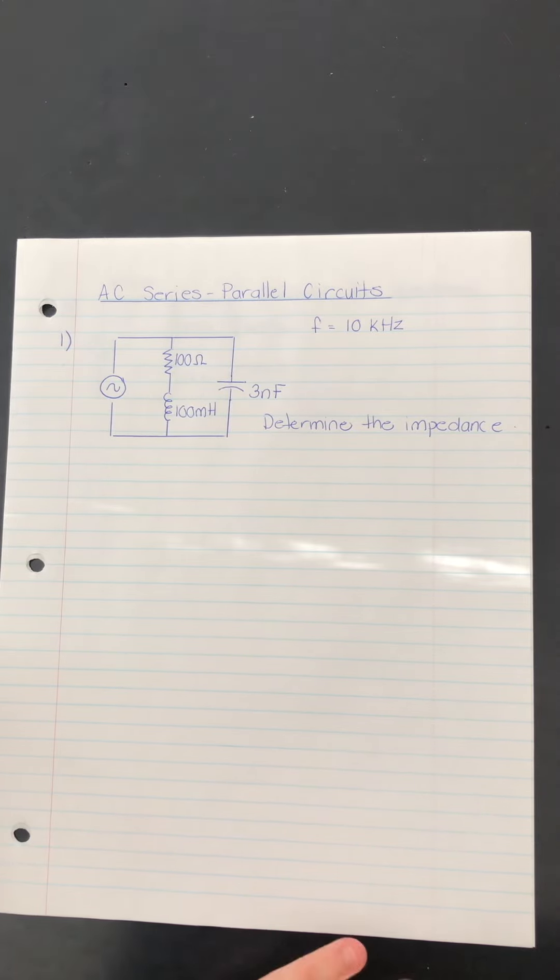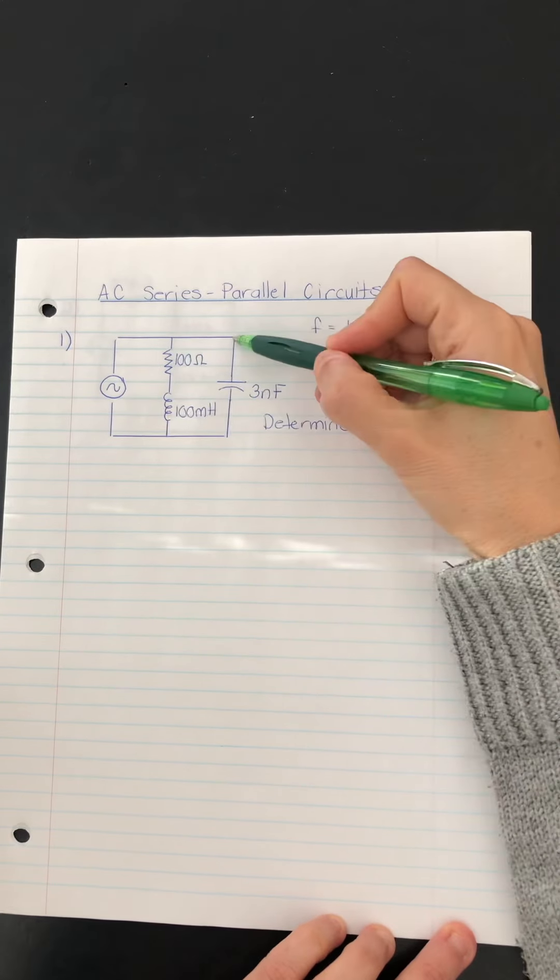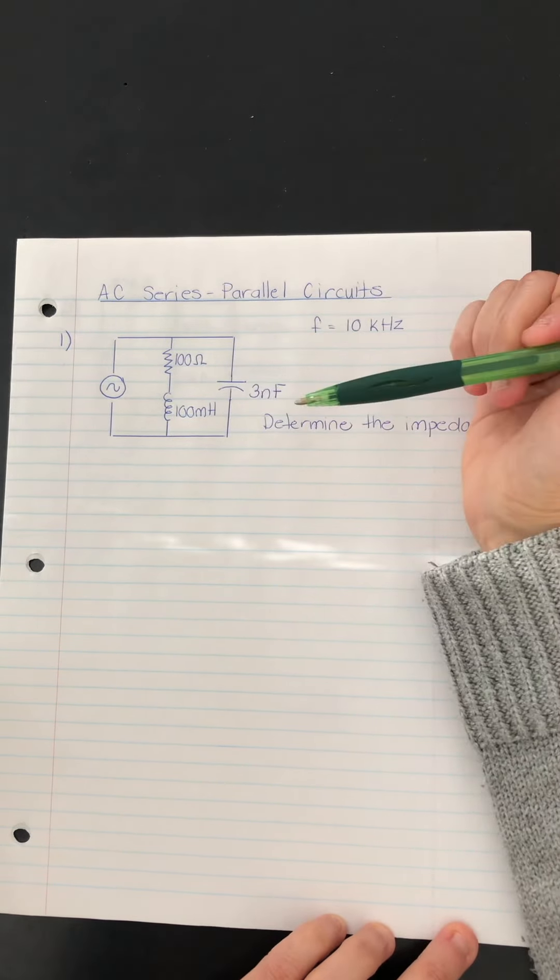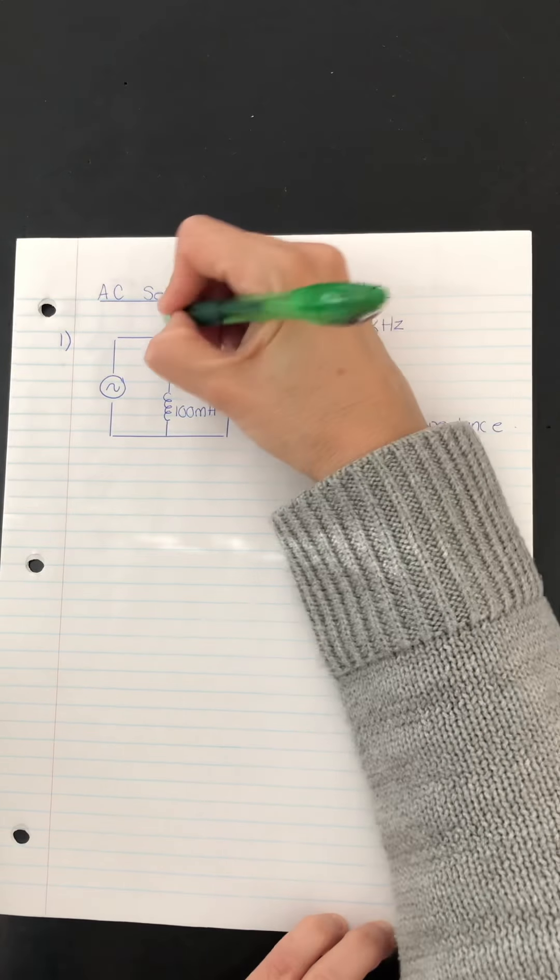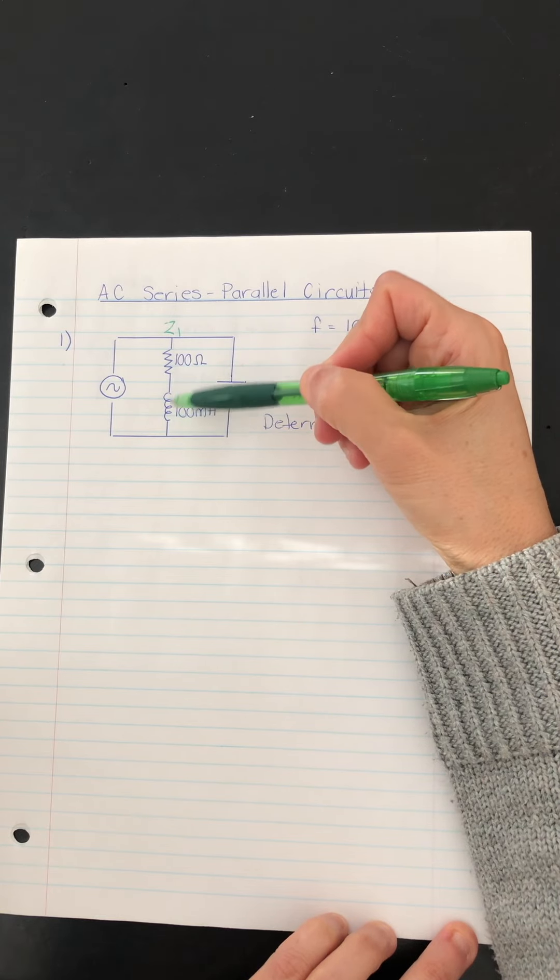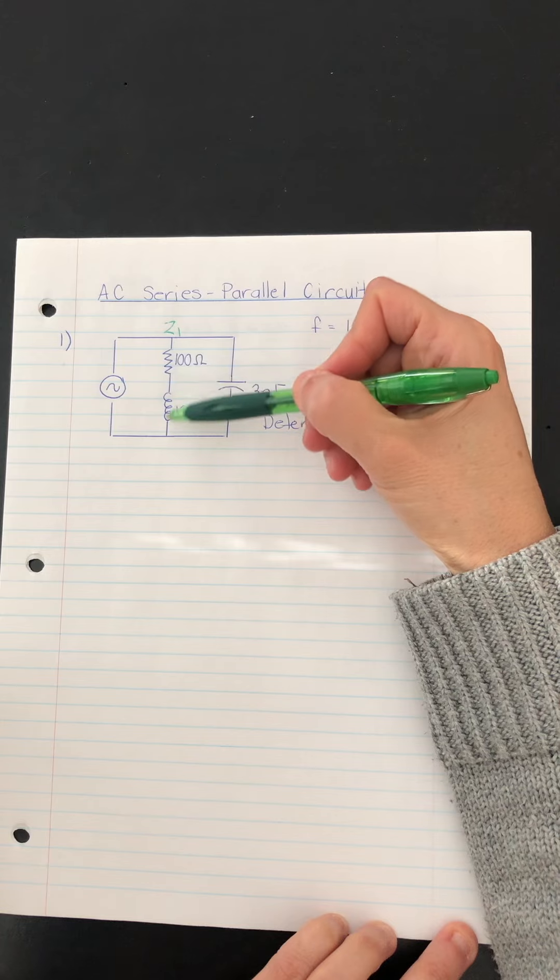What we have are two branches, this one and this one, connected in parallel to the source. So we might want to consider this branch to be Z1, and it includes a resistor and inductor connected in series.